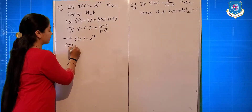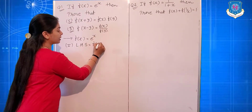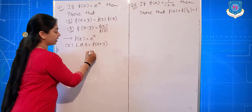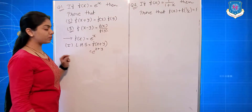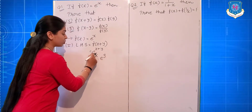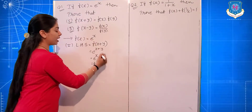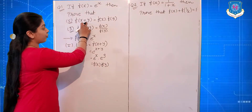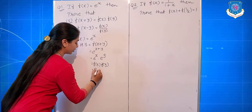For the first part, LHS is f(x+y). Put x+y in place of x, that gives e raised to (x+y). Now, e raised to (x+y) is separated as e raised to x into e raised to y. Here, e raised to x is f(x) and e raised to y is f(y). So, we prove that f(x+y) = f(x) into f(y), which equals LHS.